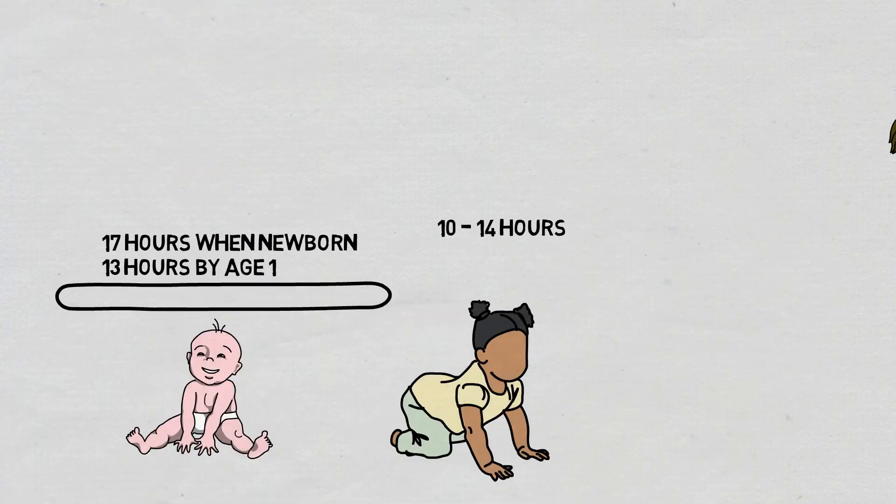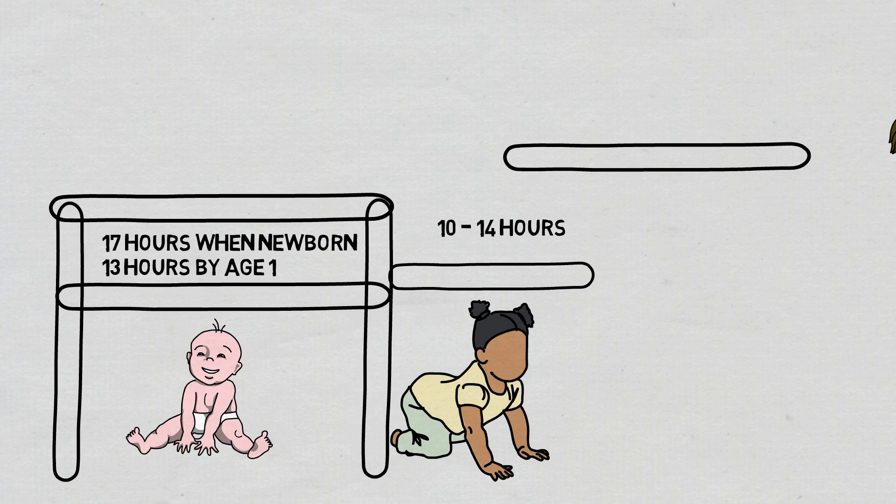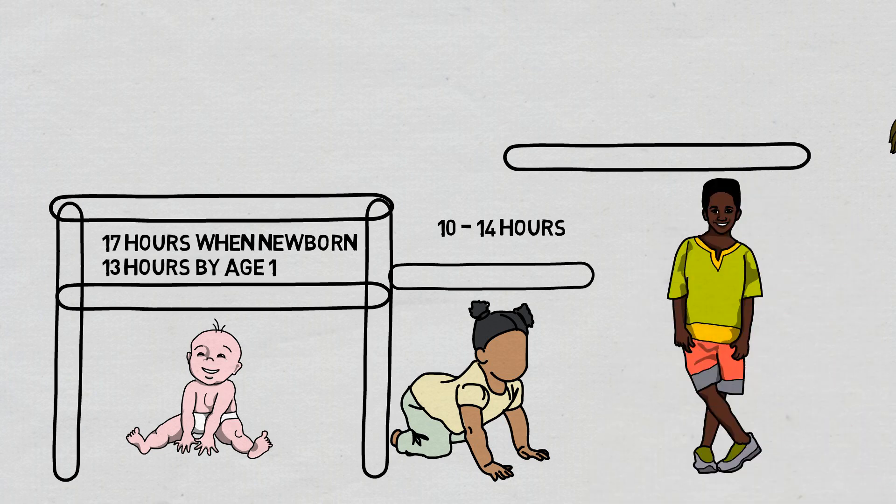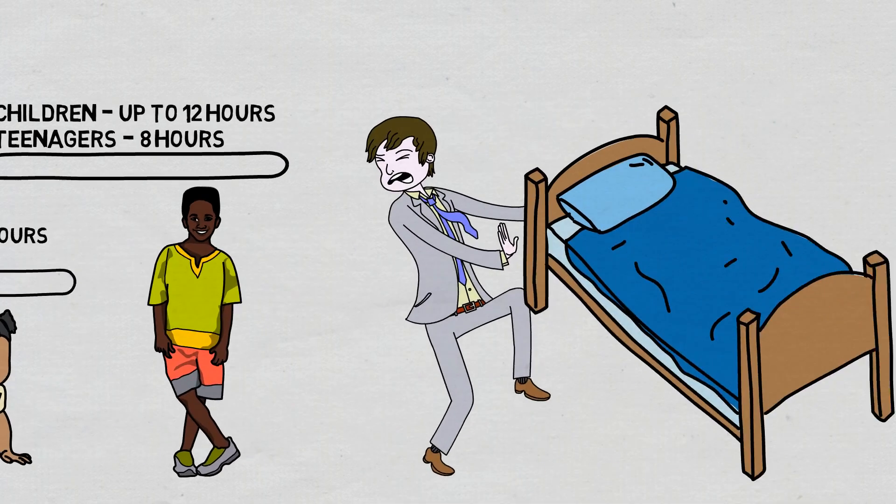Now looking at children and teens, they will need more sleep than young adults and adults, as we can see on this table, and this is for exactly the same reasons. Though we can see that the average sleep hours needed actually does slowly decrease as they increase in age, with the youngest children needing up to 12 hours and teenagers needing as little as 8 hours.